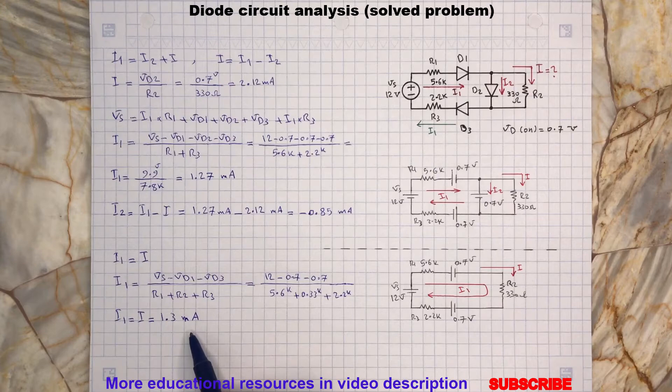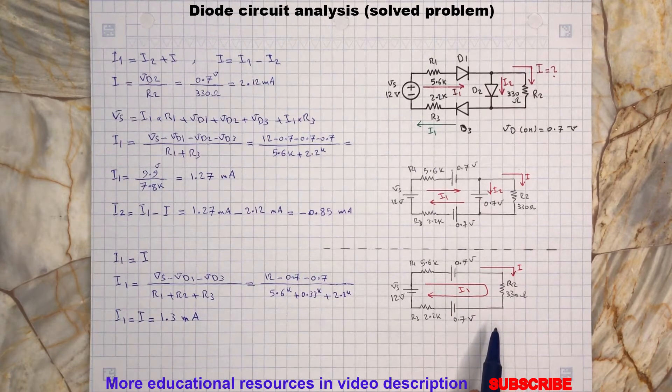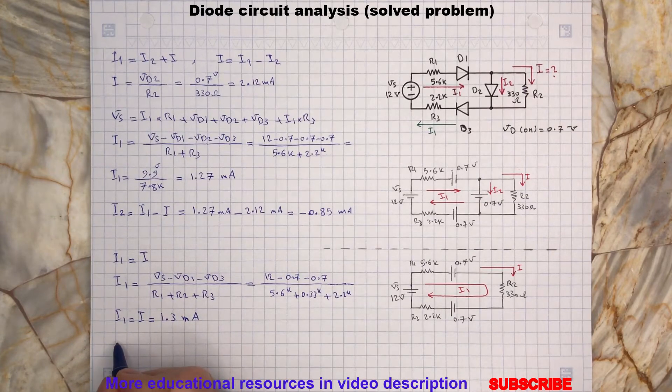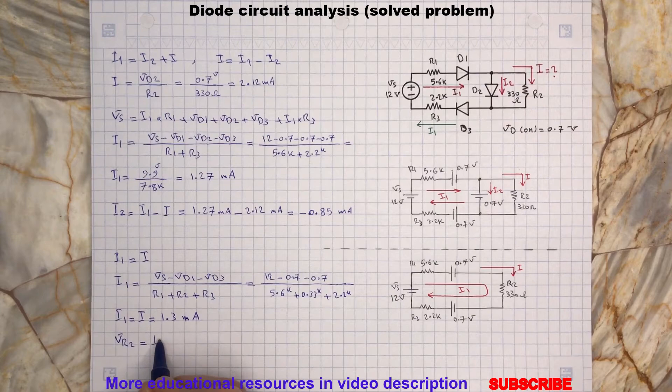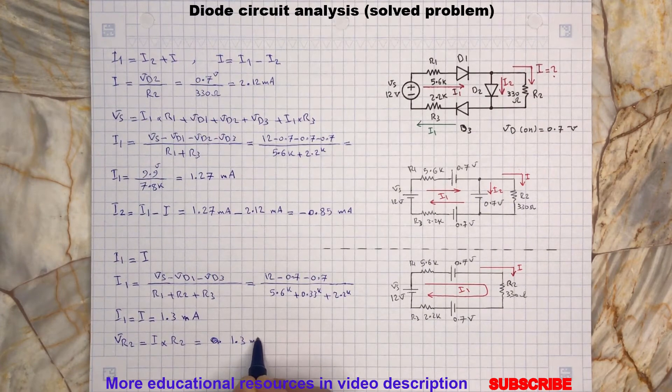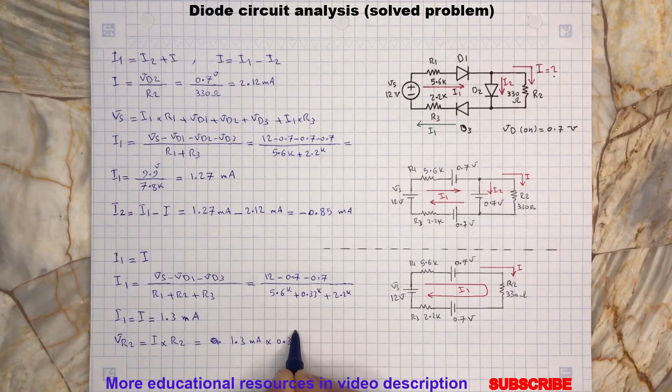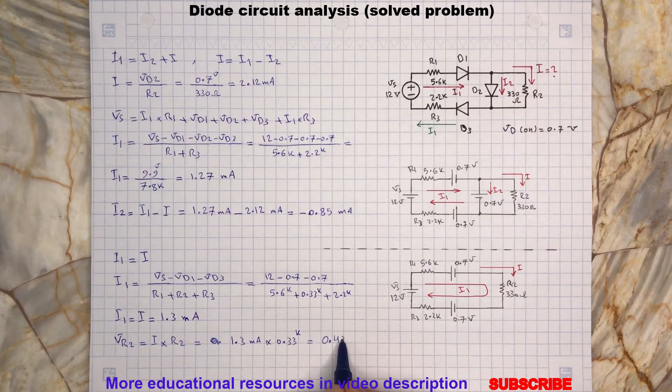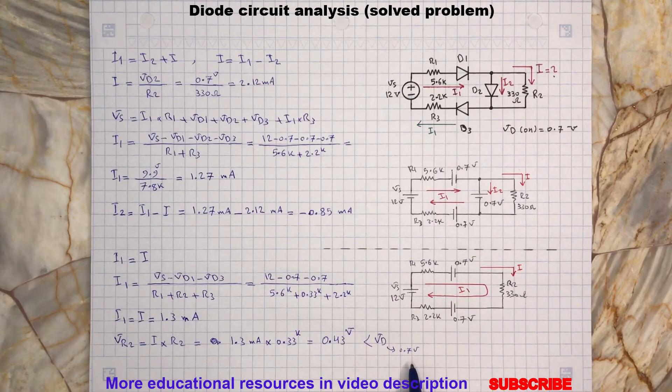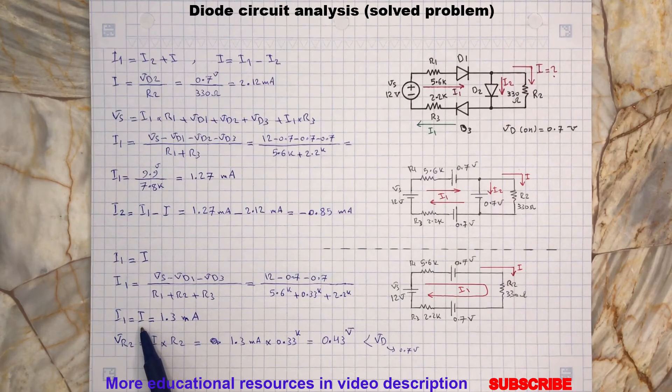So we found the current flowing through the resistor R2. Let's calculate the voltage across R2 because it will help us to understand why D2 was off. As you can see here, there is only 0.43 volts across R2, while all the diodes needed at least 0.7 volts to turn on. So we found the current flowing through R2.